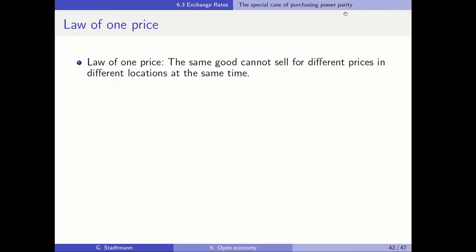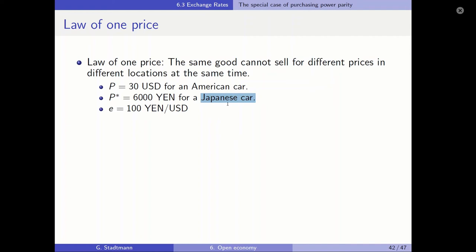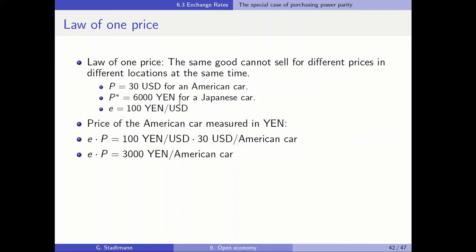The next topic deals with purchasing power parity. One version of purchasing power parity is the law of one price, which states that the same good cannot sell for different prices in different locations at the same time. We already looked at a numerical example about selling cars in the U.S. or in Japan. The price of the American car measured in yen is equal to 3,000 yen, while the car is sold in Japan for 6,000 yen.